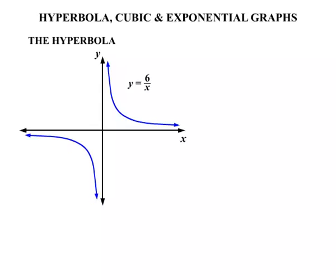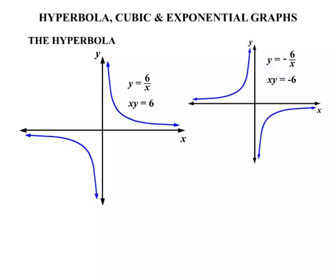We now move to the hyperbola. Again there's our axes. Now an example of a hyperbola would be y equals 6 over x. It would look something like that. Now y equals 6 over x can also be rewritten as xy equals 6. They are identical equations. Let's consider another one. This time y equals minus 6 over x. Another way of writing that: xy equals minus 6. Well this time the graph looks like that.